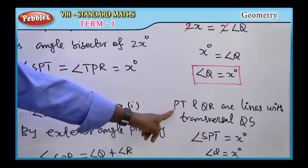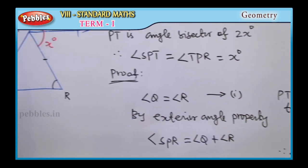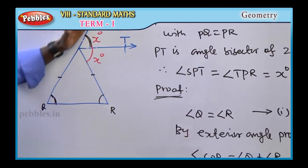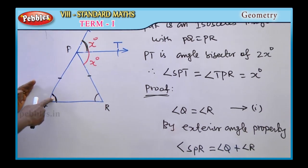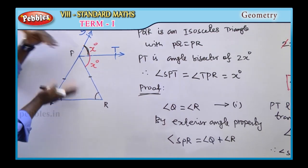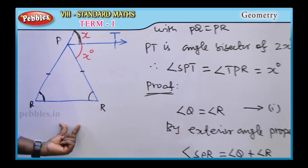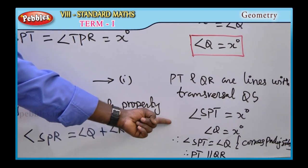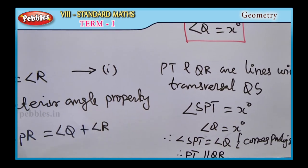Second proof: PT and QR lines with transversal QS. Angle SPT equals x degrees, and angle Q is also x degrees. These two are corresponding angles of parallel lines. Since corresponding angles are equal, PT line is parallel to QR. Both proofs are now complete.